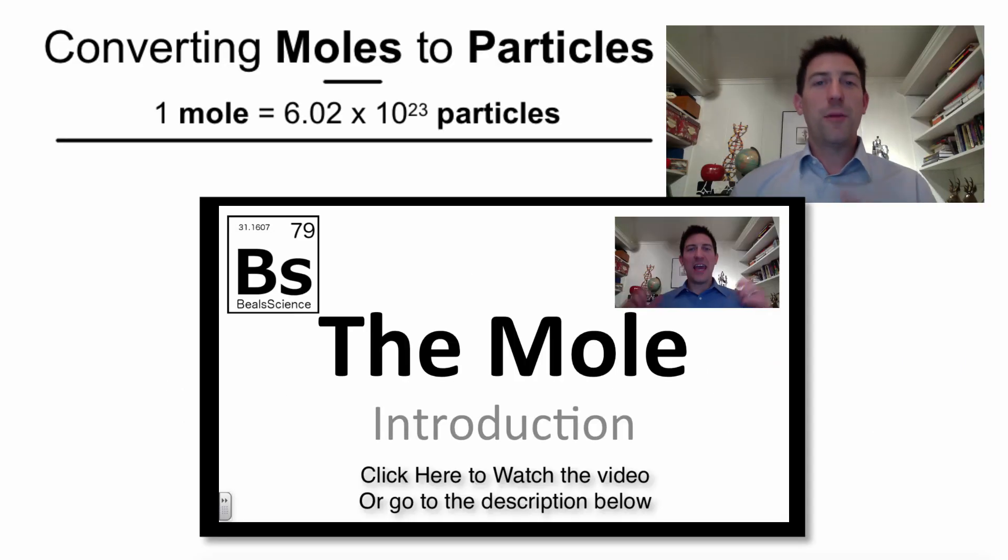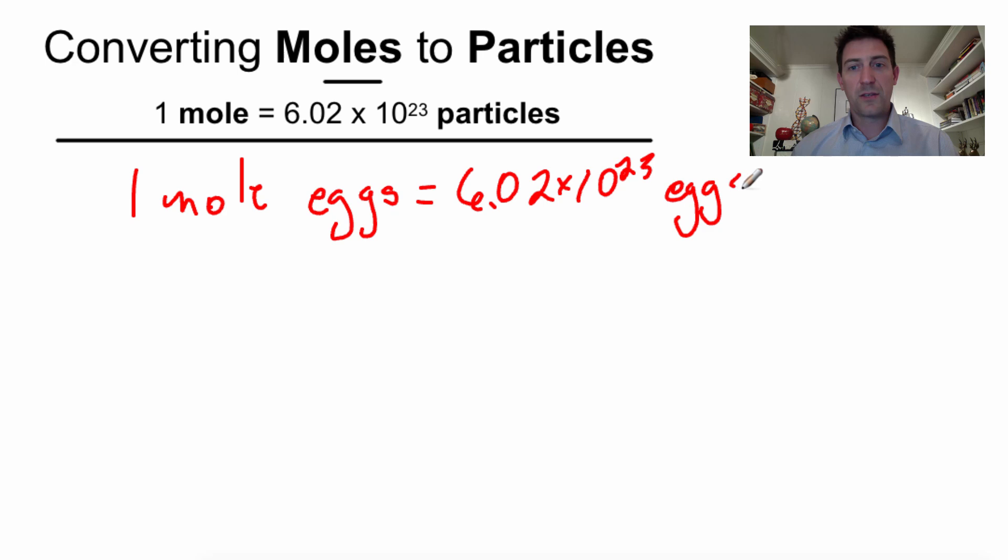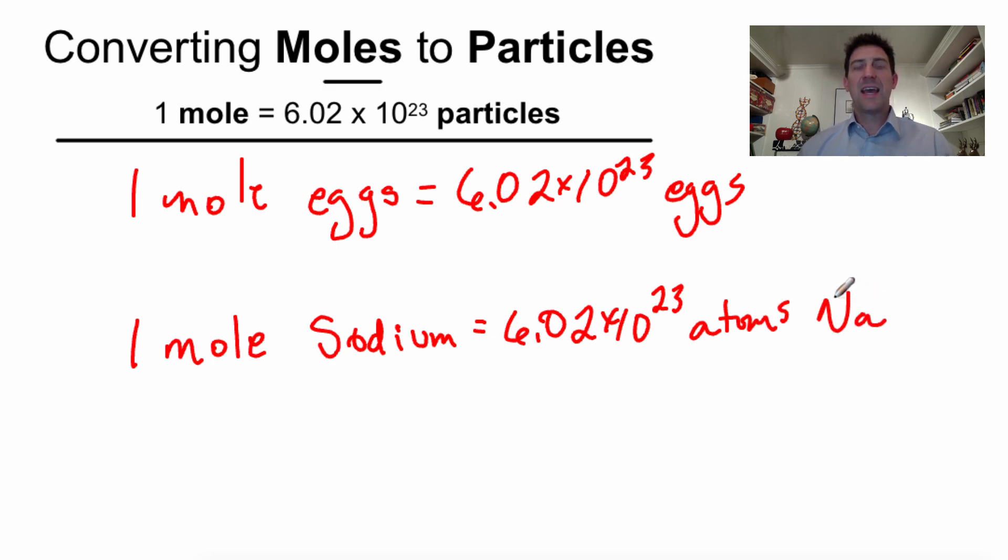Now remember, if you go back to an earlier video, you're going to find out that one mole is 6.02 times 10 to the 23rd particles. It doesn't matter what those particles are. For example, if we had one mole of eggs, we would have 6.02 times 10 to the 23rd eggs. We could have one mole of sodium. That means we've got 6.02 times 10 to the 23rd sodium atoms. If this confuses you, go back to the video right before this one, which gives you the whole rundown of what a mole is.